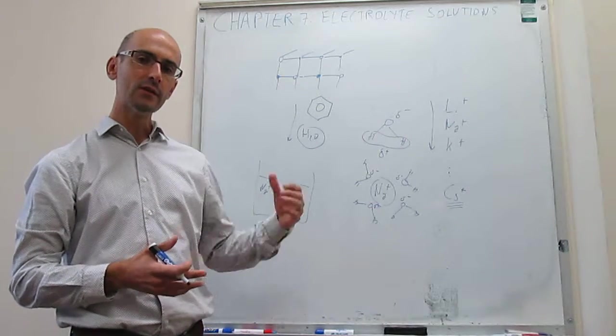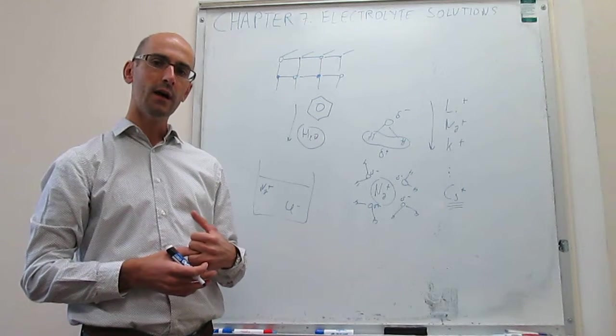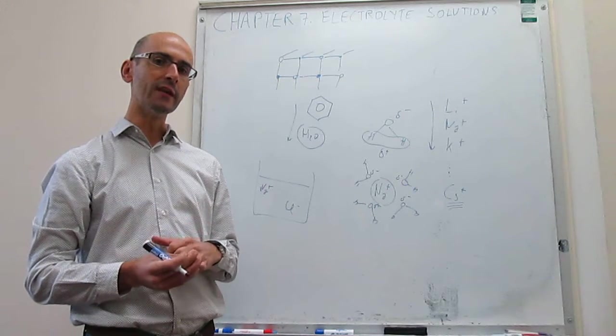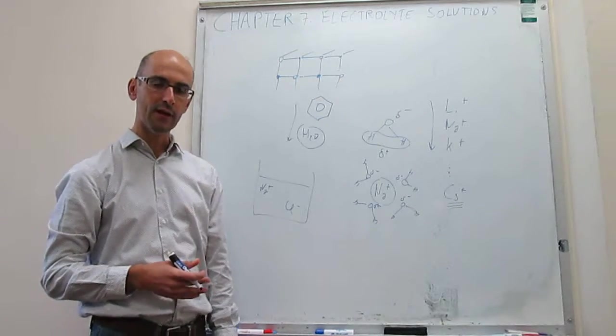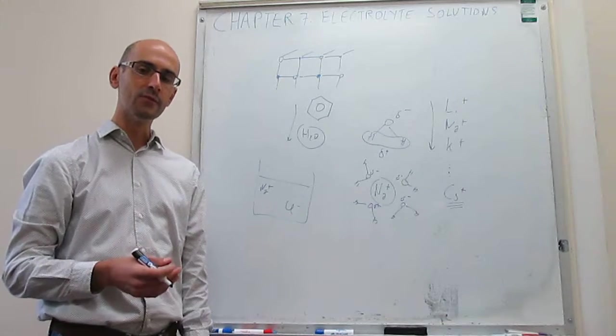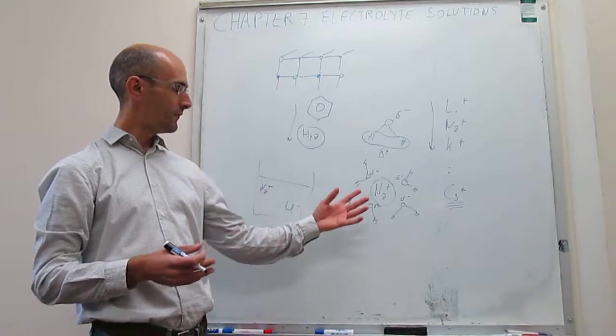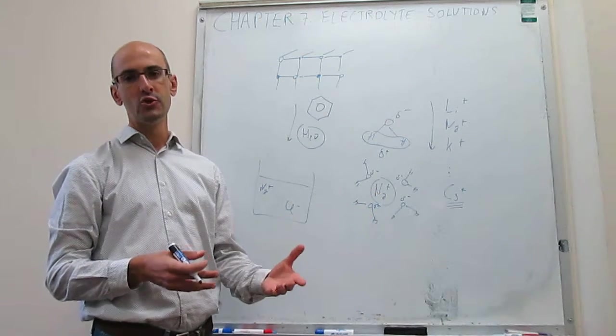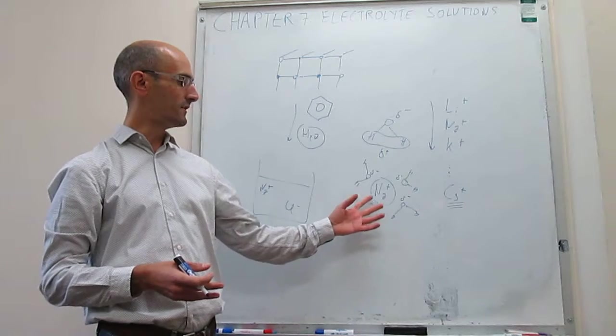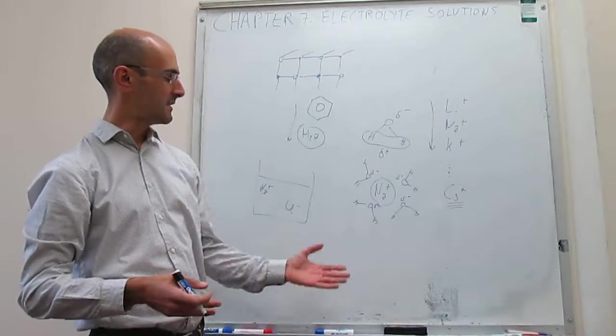Now, this also gives us some perspective into why electrolyte solutions are going to deviate from ideality much more than non-electrolyte solutions. Again, remember that for to have an ideal solution, what should happen is that the interactions of this ion with the solvent should be as strong as the interactions of the ion with the ion or the solvent with the solvent. And that's actually not the case here.